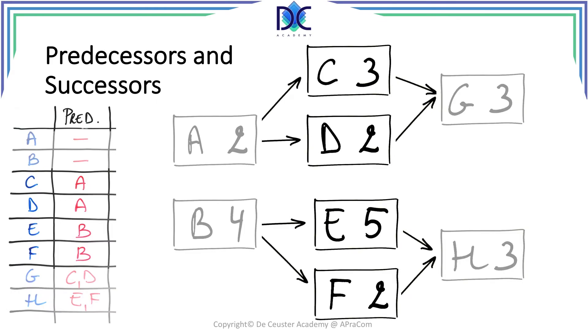The intermediate tasks C, D, E, and F have both predecessors and successors. And we link the relationship between predecessors, successors, and the different activities by arrows. For example, the arrow from A to C shows that A has to be finished before activity C can start.